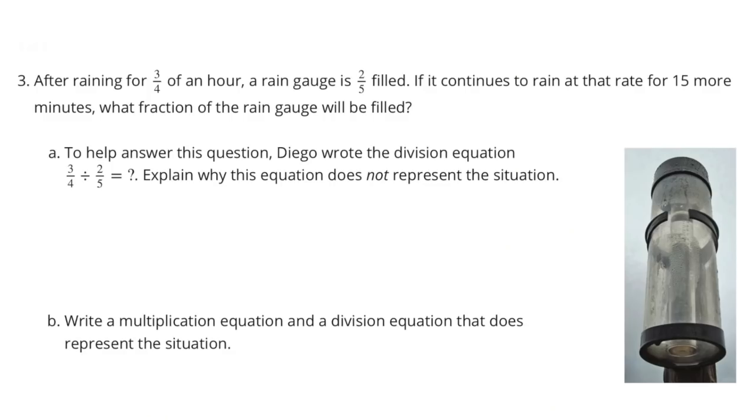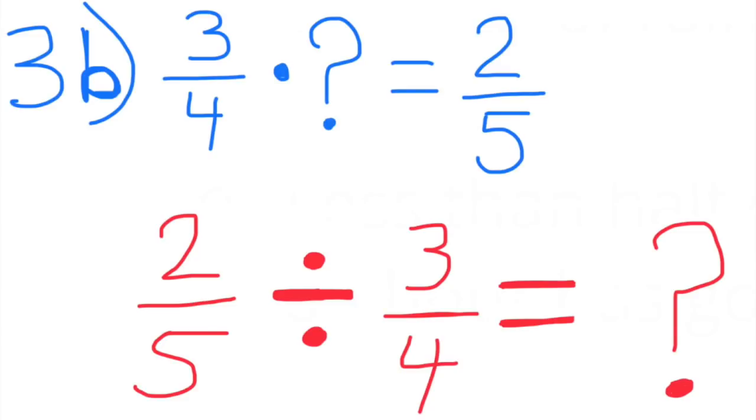B. Write a multiplication equation and a division equation that does represent the situation. Three-fourths times what number equals two-fifths, and two-fifths divided by three-fourths equals what number?